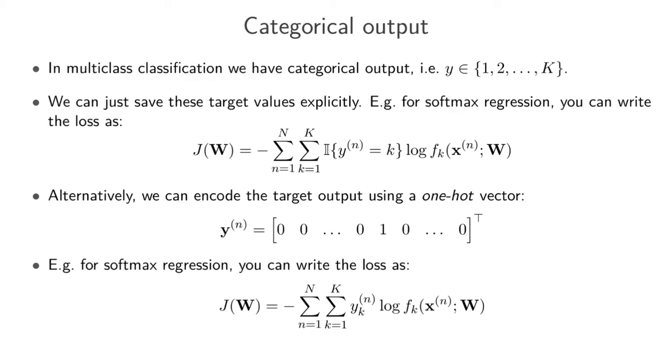In multi-class classification we have categorical output. That means our output label corresponds to one of capital K distinct classes. One way if you're implementing softmax regression is to just save these class numbers in some array and then keep track of what class a specific input belongs to. Then you're basically just implementing the loss function directly where you have this indicator which indicates which class the nth training item comes from.